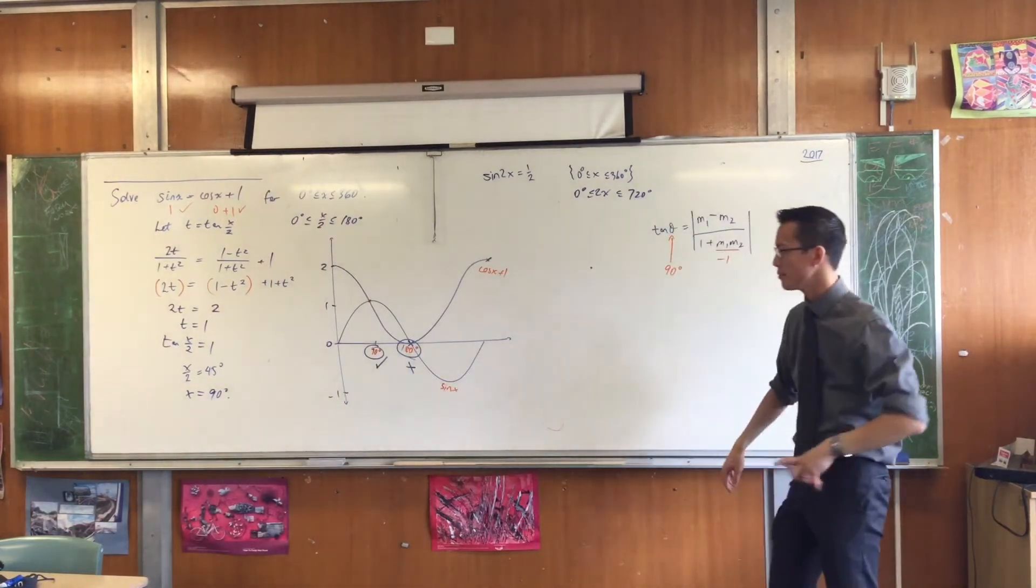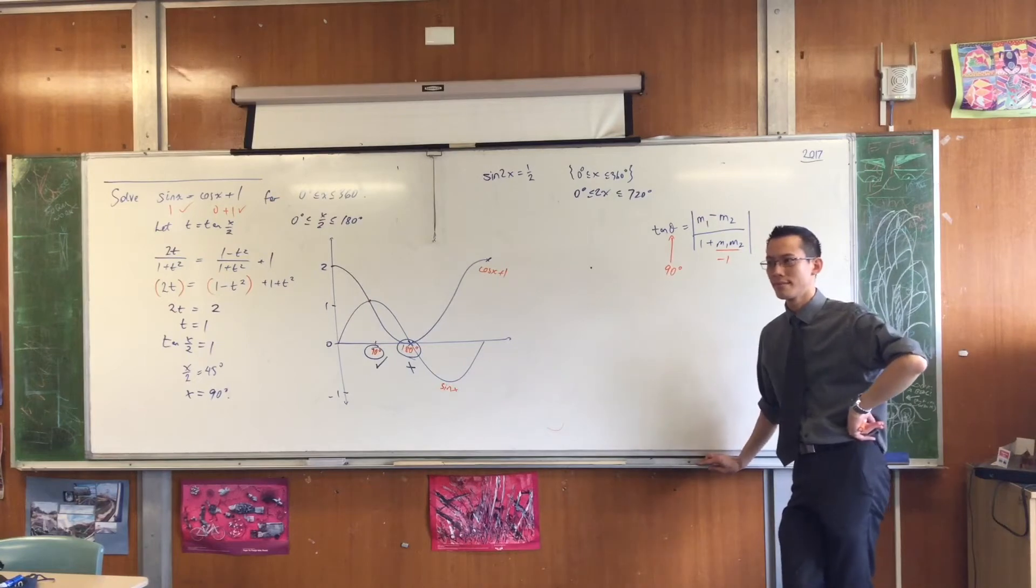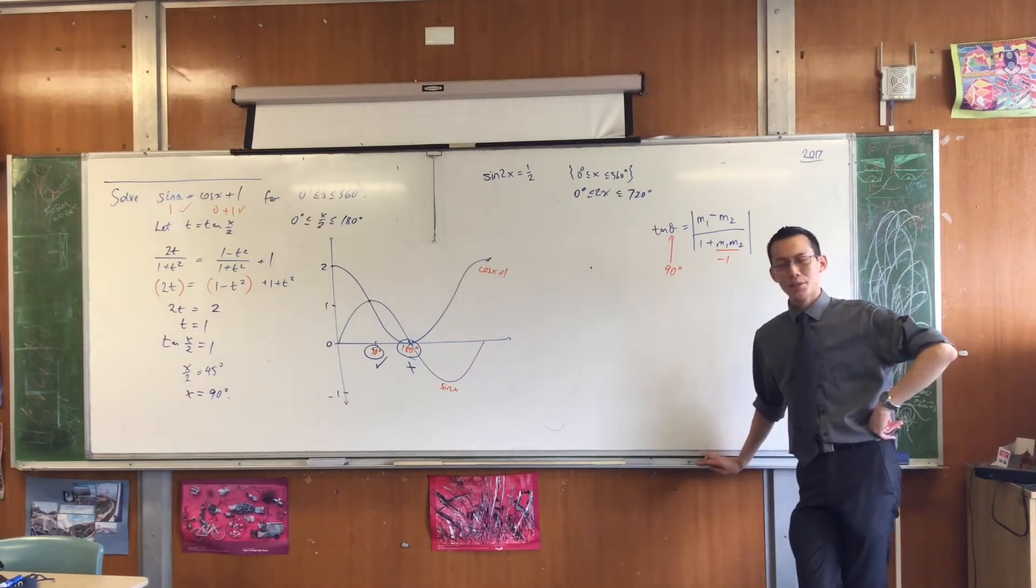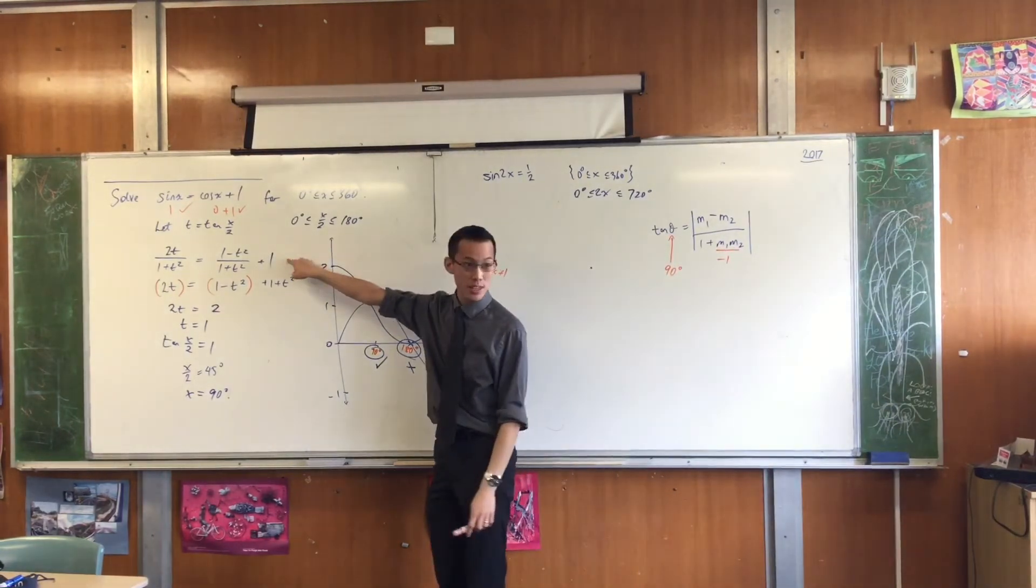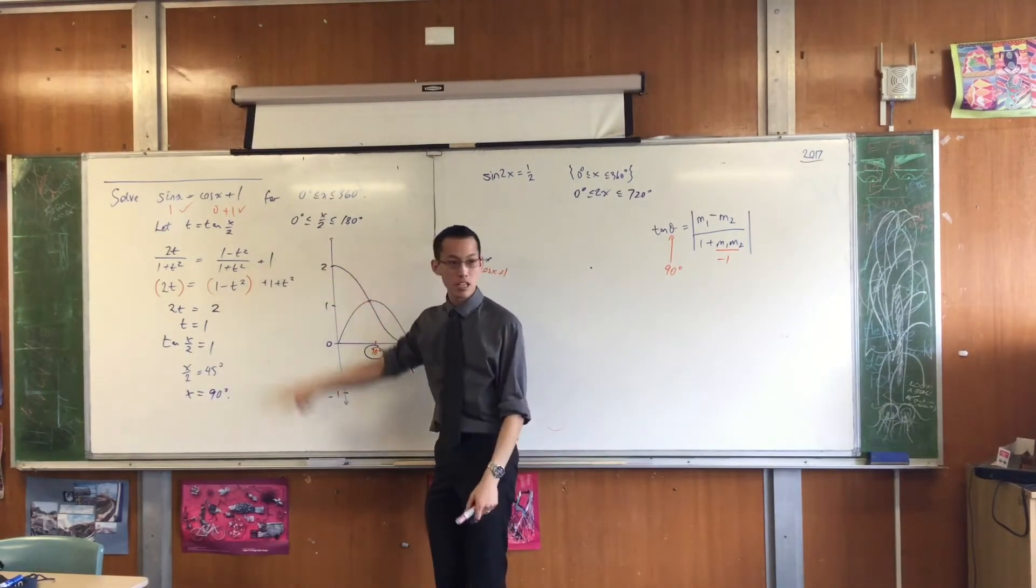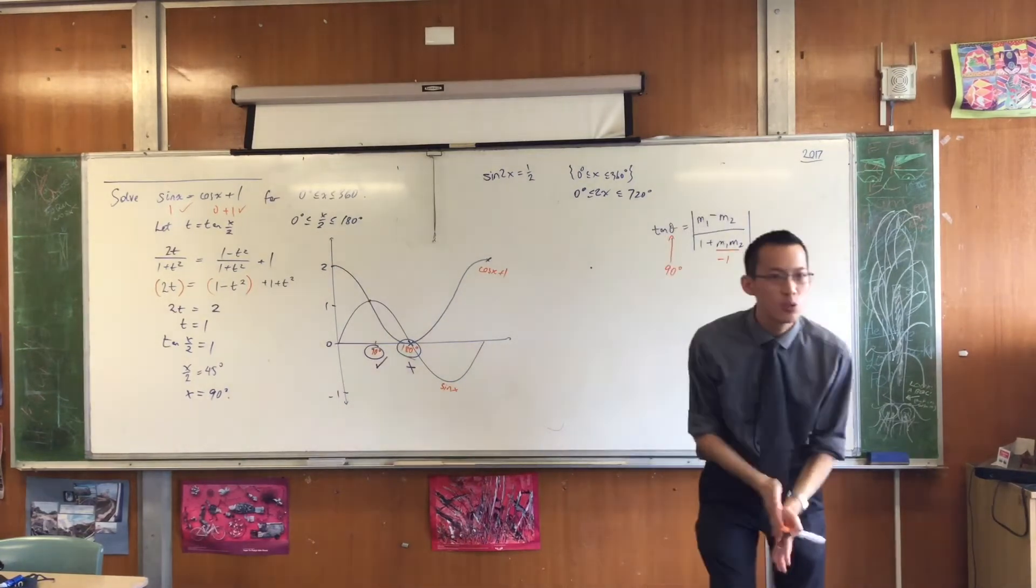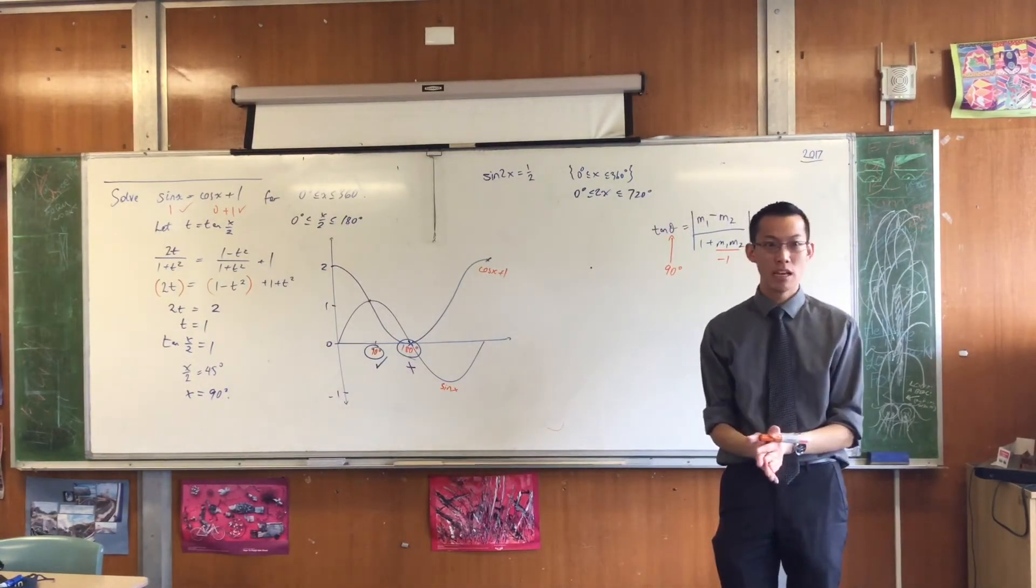Wait, if x equals 180, then if you put it into tan(x over 2), then it equals tan(90). So my premise for this whole setup, as soon as I started doing this, I was assuming everything was in terms of tan, right? How many tans do you see in the original equation? None.